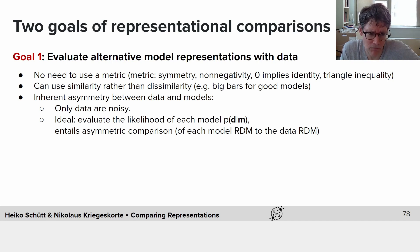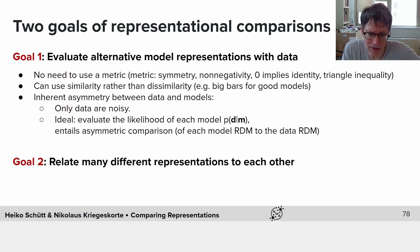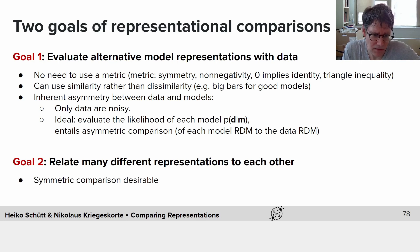This entails a fundamentally asymmetric comparison that's not consistent with the use of a metric, which would be symmetric. But there is another goal, which is to relate many different representations to each other. For example, in the context of AI, we might have different neural network models each with many different layers, and we might want to understand how all of these different representational spaces relate to each other. In this context, a symmetric comparison is desirable, because each of the models are peers and we want to compare them to each other.